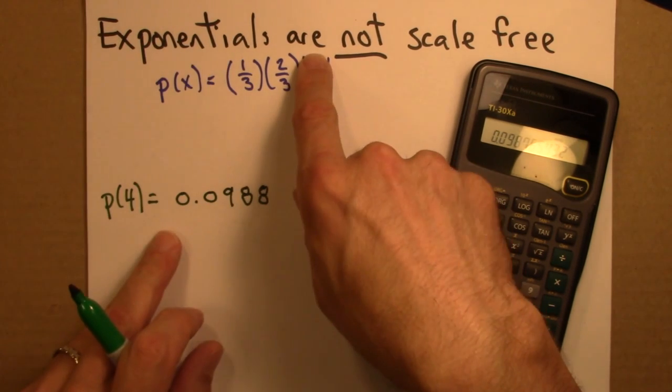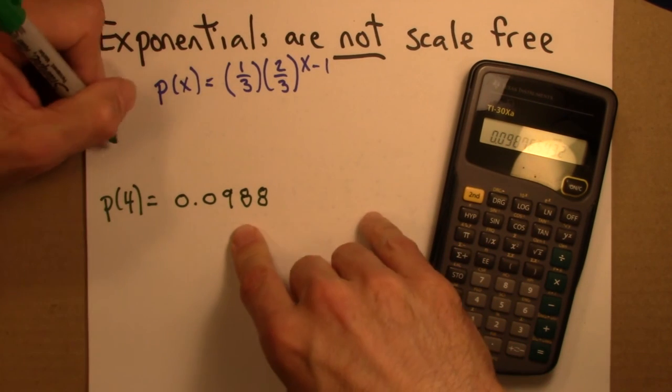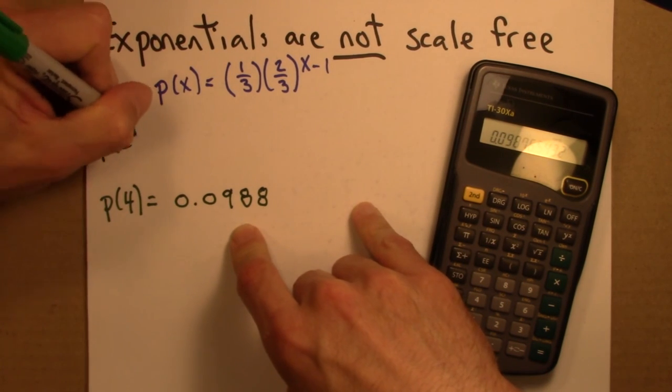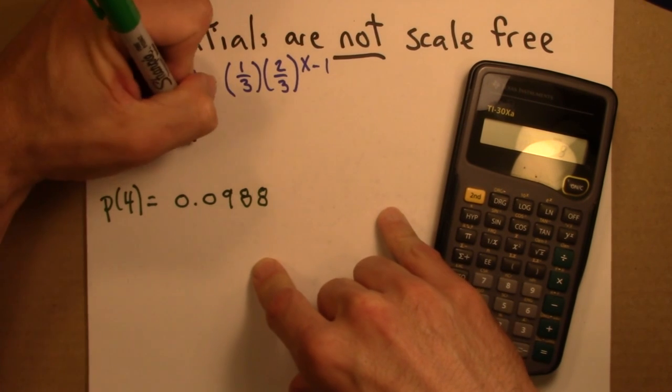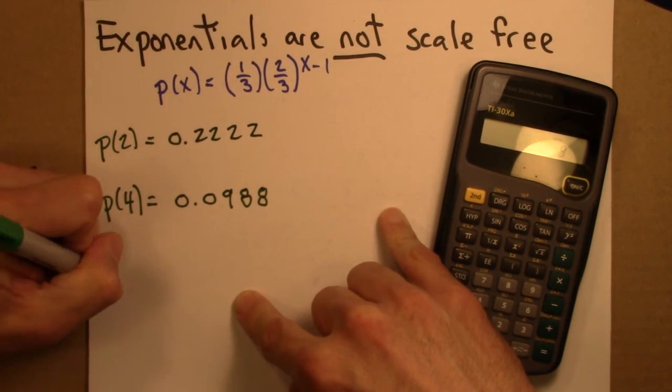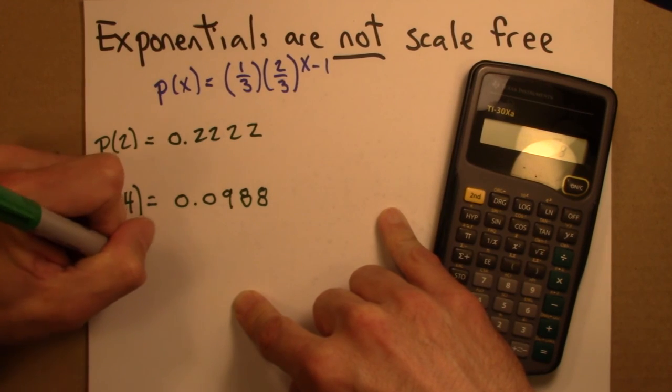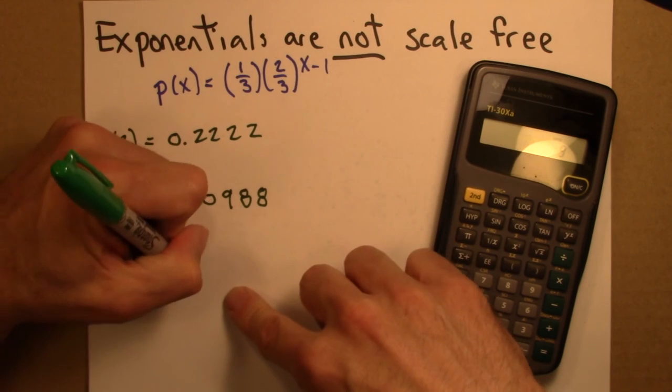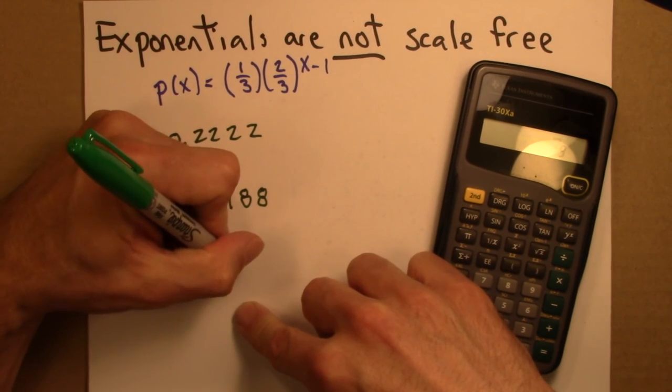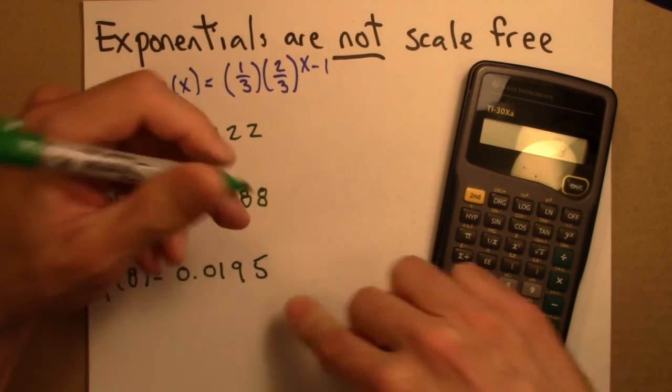So I'm just plugging into this formula. I can do the same thing, and I won't do all the calculator work because I've done it ahead of time. And P of 8, again just plug into the calculator, plug into the formula, 0.0195.